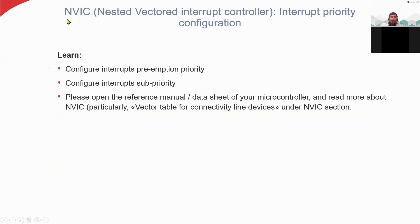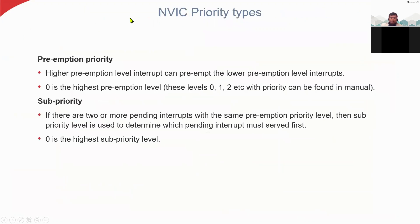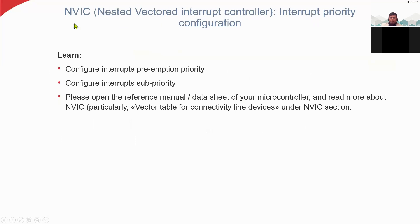Now we will see NVIC - what is NVIC? Nested Vector Interrupt Controller, shortly we call this NVIC. The purpose of NVIC is setting up priority to interrupts. You can learn from this how to configure interrupt preemption priority and configure interrupts with sub priority. Please open the reference manual or datasheet of your microcontroller and read more about NVIC. So what is preemption priority and what is sub priority?